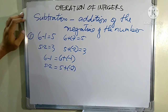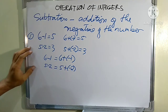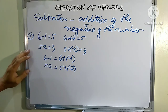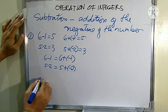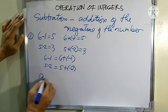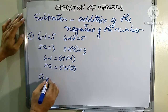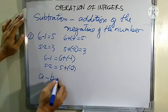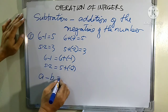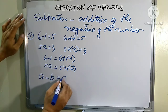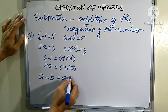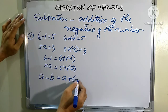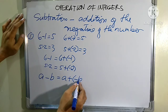From these two examples we can make a conclusion: any number a subtracted by another number b is the same as a plus the negative of b.